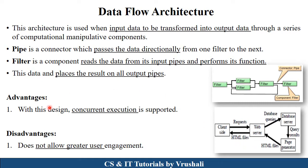The advantages of data flow architecture are that concurrent execution is supported — client requests web server, web server requests database server, database server displays result, and the result is shown to the client. The disadvantage is that it does not allow greater user engagement. For example, when exam results are declared, all students search a particular university site at the same time and the website can get hanged. Similarly with scholarship websites — they do not allow greater user engagement.